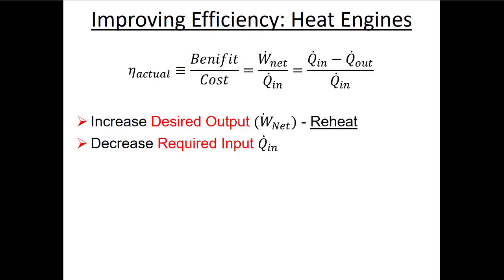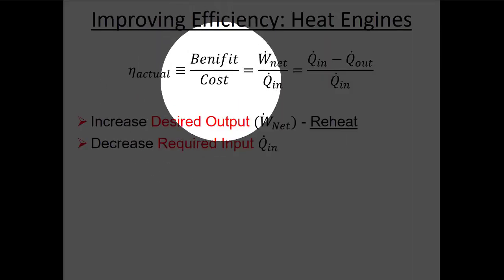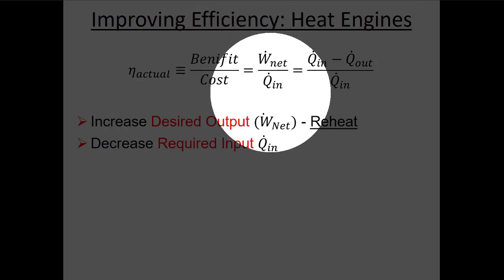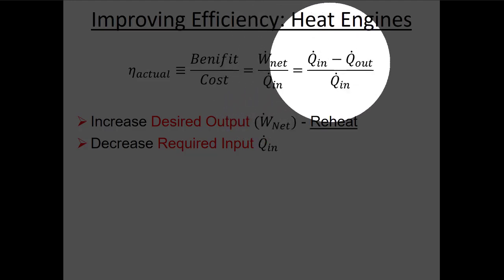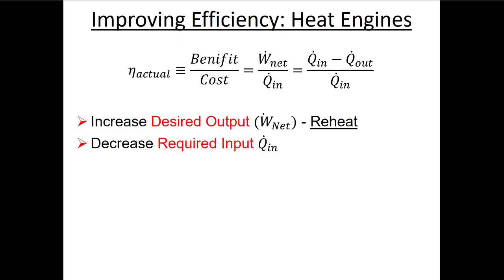The thermal efficiency for a heat engine is given by taking the energy benefit divided by the energy cost, or the net power divided by the heat transfer in. From a first law analysis of the entire system, the net power is the same as the net heat. Last class we talked about reheat, which is adding another turbine to get more net power out of the system. Today we're talking about regeneration, a way to reduce the required input heat.